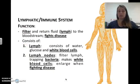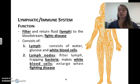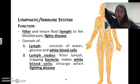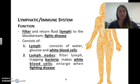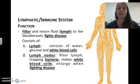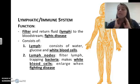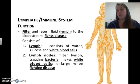The lymphatic or immune system's function is to filter and return lymph fluid to the bloodstream — this is what helps fight diseases when you're sick. Lymph consists of water, glucose, and white blood cells, and flows through your veins and arteries. Lymph nodes filter the lymph, trapping foreign bacteria, and also make white blood cells. They enlarge when you're fighting disease — those swollen glands under your chin are lymph nodes.